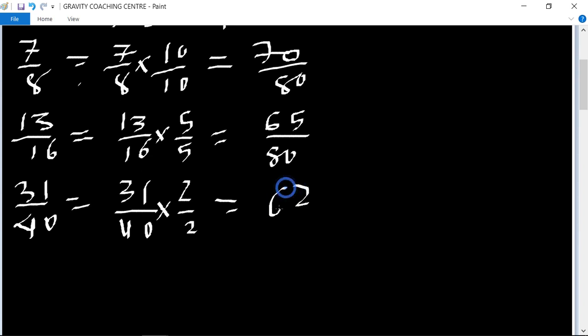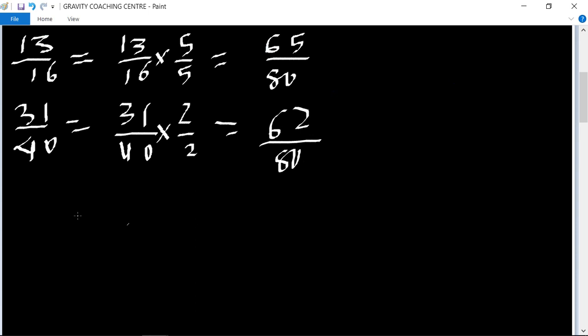Last option is 63 upon 80. 63 upon 80 multiplied by 1 upon 1 equals 63 upon 80.